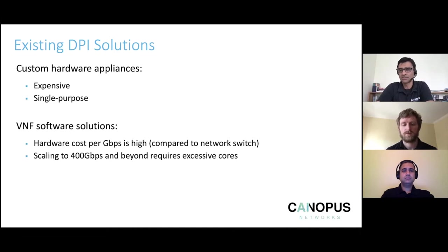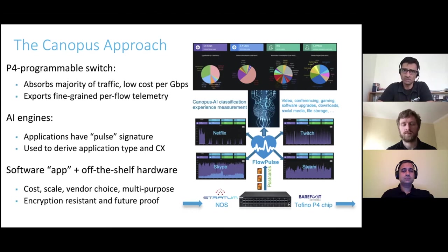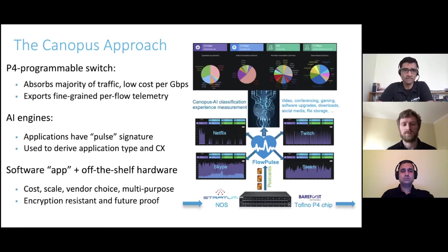The number of cores required on general purpose compute to reach those rates becomes really excessive. That's where Canopus comes in, leveraging the same paradigm Brian mentioned: keep as much data as possible in a white-box programmable P4 data plane to get low cost per gigabit per second, and move the intelligence and logic out into general purpose compute cores. You get the best of both worlds — the grunt, speed, and low cost per gigabit per second of the white box hardware, plus the flexibility, intelligence, state management, and AI machinery on the compute side.